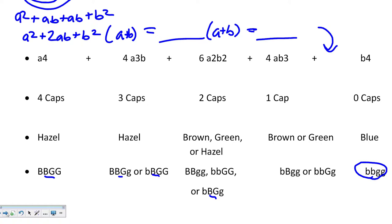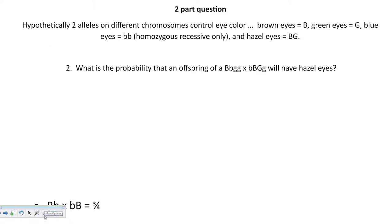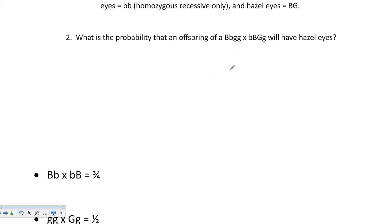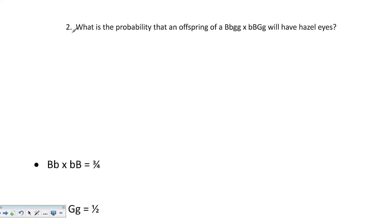Second part of the question, where we talked about eye color, is we wanted to know what is the probability that an offspring from this cross will have hazel eyes. Remember, we're targeting the probability that we'll have a big B and a big G in the offspring. So first things first, we're going to look at the gametes. The big B here, gametes for brown eyes and blue eyes. When you combine these, you have a three-fourths chance of having your big B present.